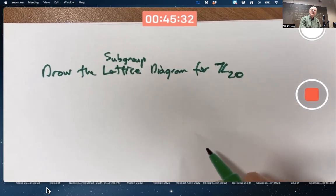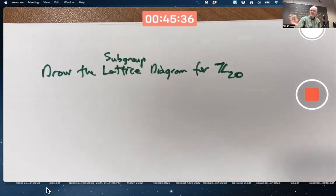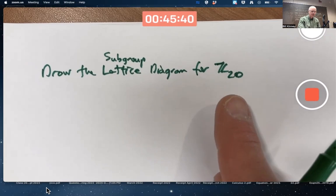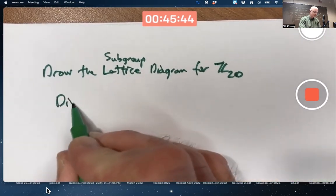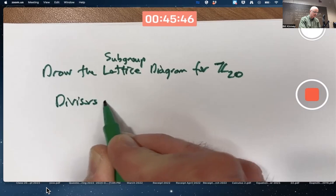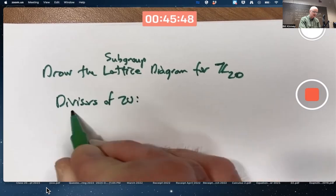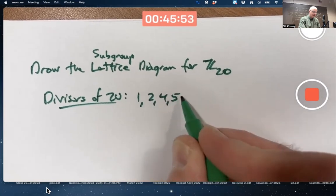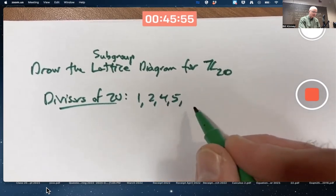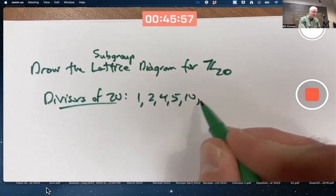It'd probably be good to figure out how many subgroups Z20 has. By the fundamental theorem of cyclic groups, it's got exactly one subgroup for each divisor of 20. What are the divisors of 20? 1, 2, 4, 5, 10, and 20.